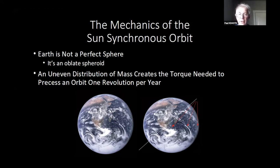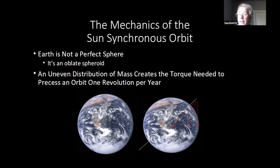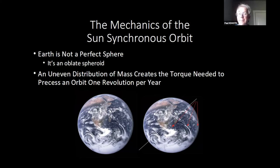Rather than carry propellant and thrusters to torque your orbit, we use the Earth to do it — because the Earth is not a perfect sphere, it's an oblate spheroid. The poles are a little smaller and the equator a little wider, creating an unequal distribution of mass. For a satellite orbit tipped at roughly 45 degrees inclination, different parts of the Earth pull on that orbit at different amounts, acting as a torque — an off-center force — forcing the orbit to precess. We use the Earth's gravity to force the orbit to rotate exactly one revolution per year relative to fixed stars.